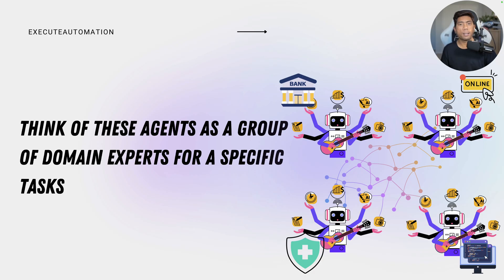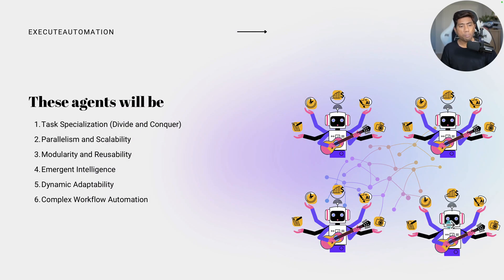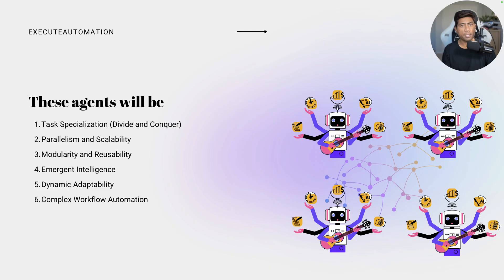This is what the agentic multi-agent system is. These agents support task specialization — divide and conquer — you can do things in parallel, and it can keep scaling based on the number of agents you create on the network. These agents can also be modular and reusable, emergent and intelligent — meaning they keep on learning to become more intelligent — and dynamically adaptable based on the questions and tasks you give them. They also work on complex workflow automation to achieve those operations.